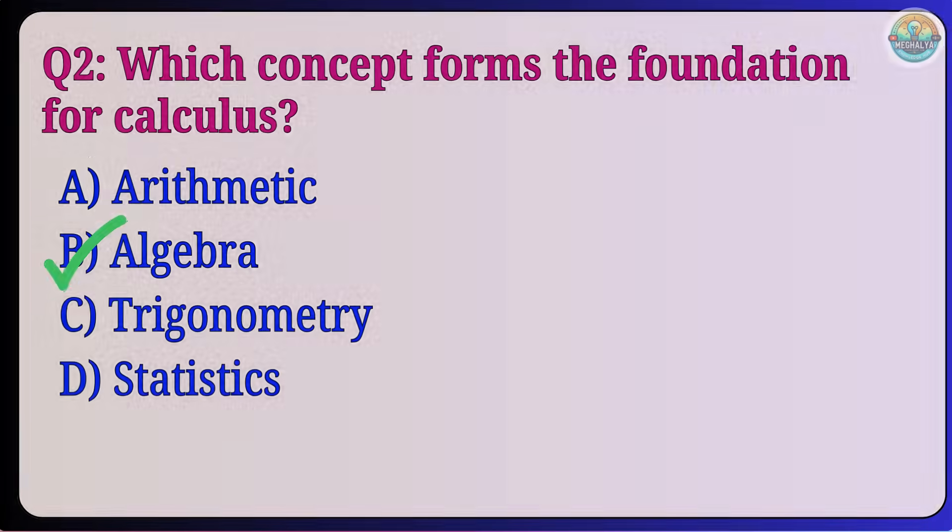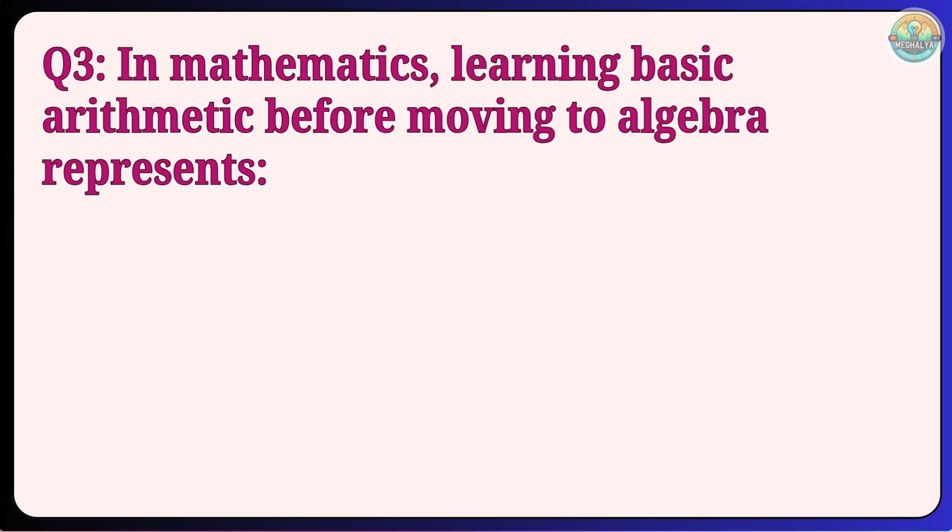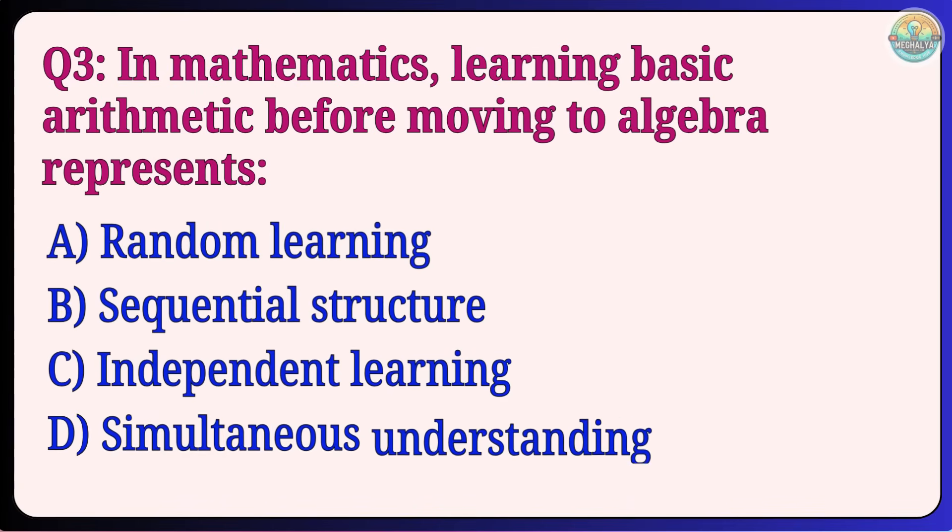Question 3: In mathematics, learning basic arithmetic before moving to algebra represents Random learning, Sequential structure, Independent learning, Simultaneous understanding. Answer: B, Sequential structure.